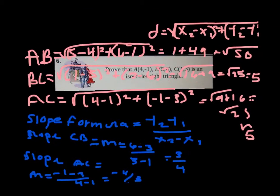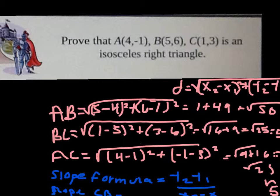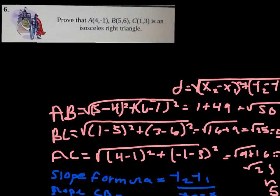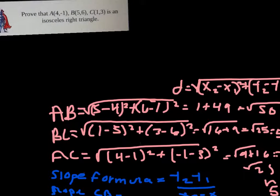Our problem is to prove that triangle ABC is an isosceles right triangle. For that we have to prove two things: that it's isosceles and that it's a right triangle. So we need to use two formulas.